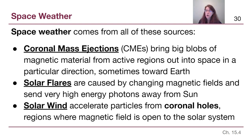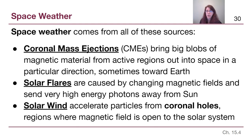As a reminder, coronal mass ejections are physical masses of plasma that used to be at the Sun and are sent out into space. If they're sent in any direction that isn't towards the Earth, we're okay, but sometimes they are sent in our direction. Solar flares are high-energy photons — they are light — and sometimes that light is able to affect satellites and other things outside of Earth's atmosphere. The solar wind is particles, electrons and protons, that would normally also be part of coronal mass ejections, but the solar wind is much lower density than CMEs and more consistent and constant. The solar wind comes from coronal holes and is very fast-moving but very low-density material.